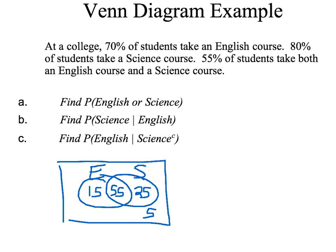There's a lot going on here, so I'm going to ask three different questions. The first question, part A, is find the probability of taking an English class or taking a science class. That means you're either in the English bubble or in the science bubble, so that's 15 plus 55 plus 25, which is 95%. So 95% of students are taking either an English class or a science class or both. The 'or' does not mean just one or the other — it could mean both also.